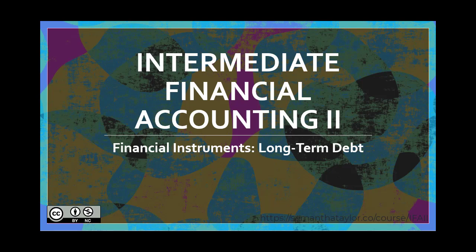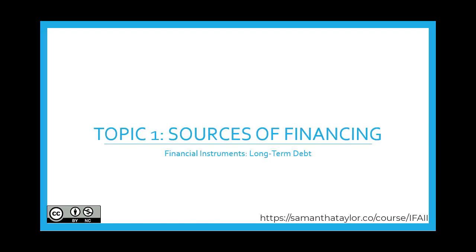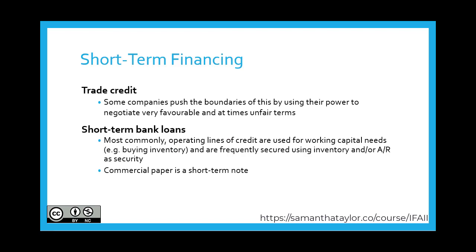This chapter is on financial instruments, long-term debt. Topic one: sources of financing. Let's take a look at different types of short-term financing first. Trade credit includes payment terms for trade accounts payables — for example, 30 days to pay — and this can create a source of financing as it is in essence a very short-term loan. Some companies push the boundaries of this by using their power to negotiate very favorable and at times unfair terms.